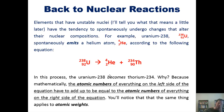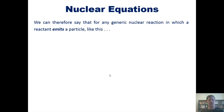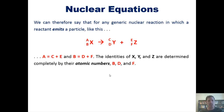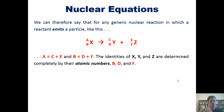Does it make sense conceptually? Well, often real life is an extension of math. For any generic nuclear reaction in which a reactant emits a particle, the superscript A has to equal C plus E, and the subscript B has to equal D plus F. The identities of X, Y, and Z are determined completely by their atomic numbers B, D, and F. Whatever B, D, and F are, you find those numbers on the periodic table, and the element next to them is the element each symbol represents.